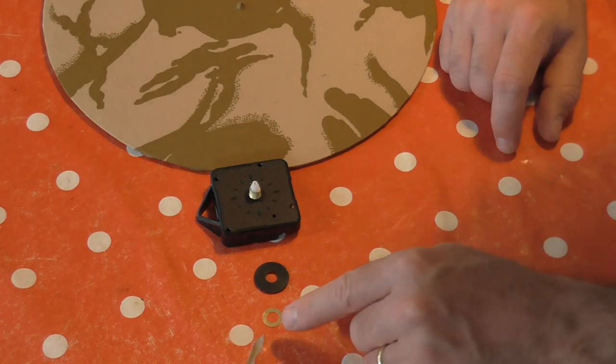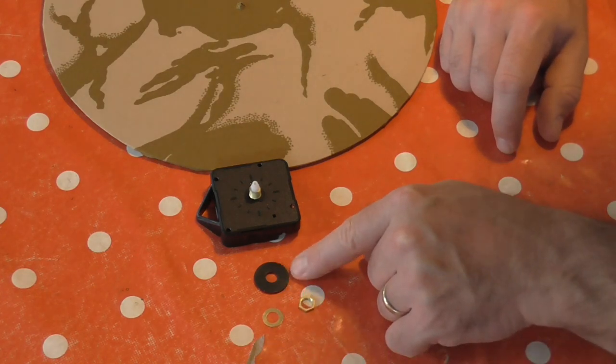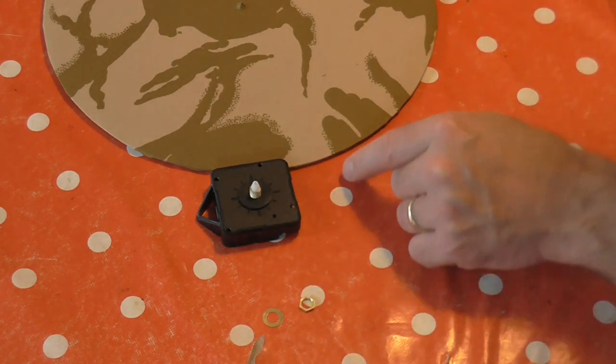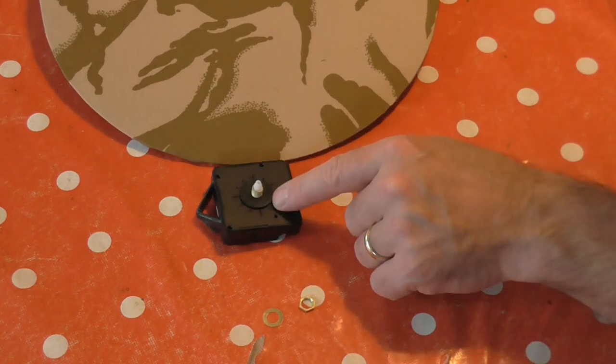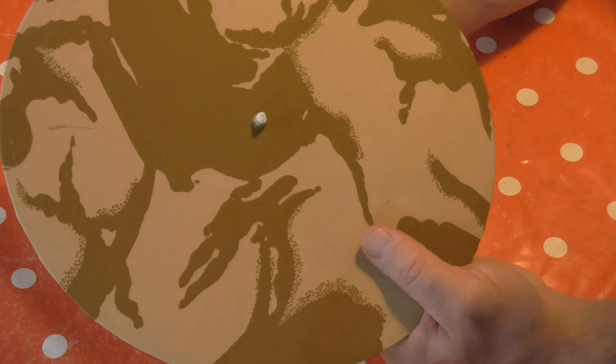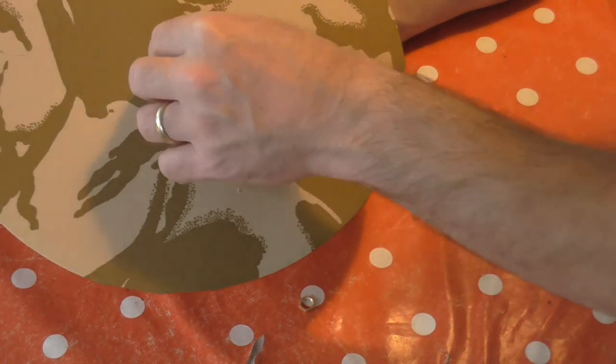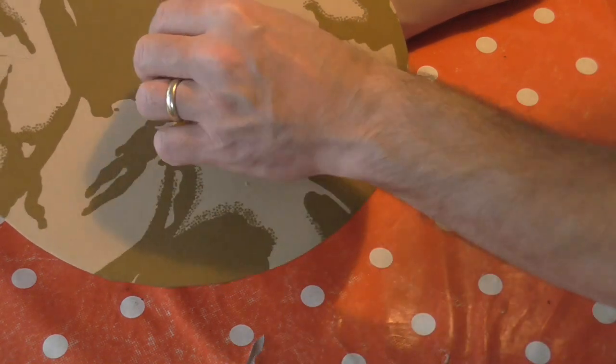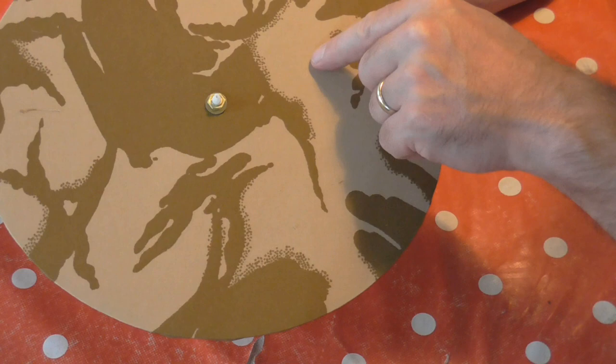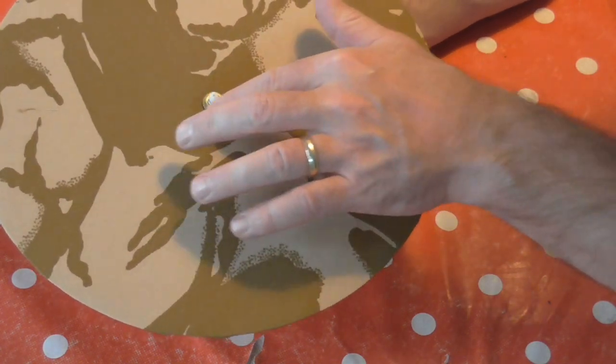So the components of the clock mechanism are a nut, a brass washer, and a rubber washer. Let the rubber washer sit on the clock mechanism. And then using the little spindle and the hole you've made, poke that through. Brass washer and then the nut. Dead simple. And then it's just a matter of hand tightening.